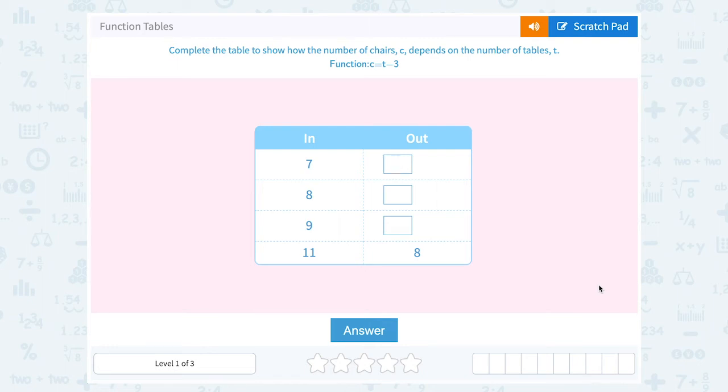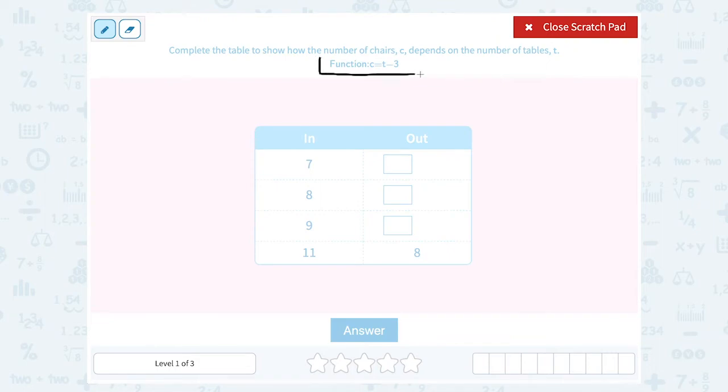Let's take a look at function tables. Complete the table to show how the number of chairs, c, depends on the number of tables, t. And they gave us the function c equals t minus 3.